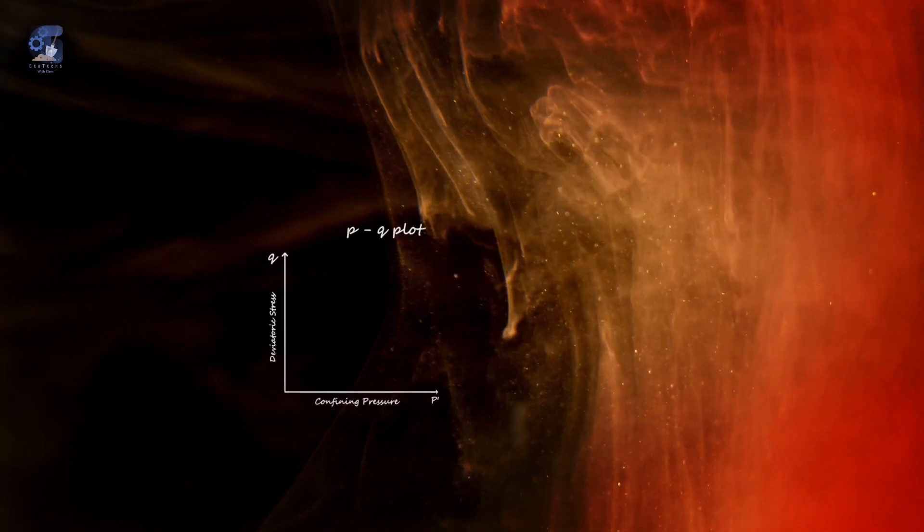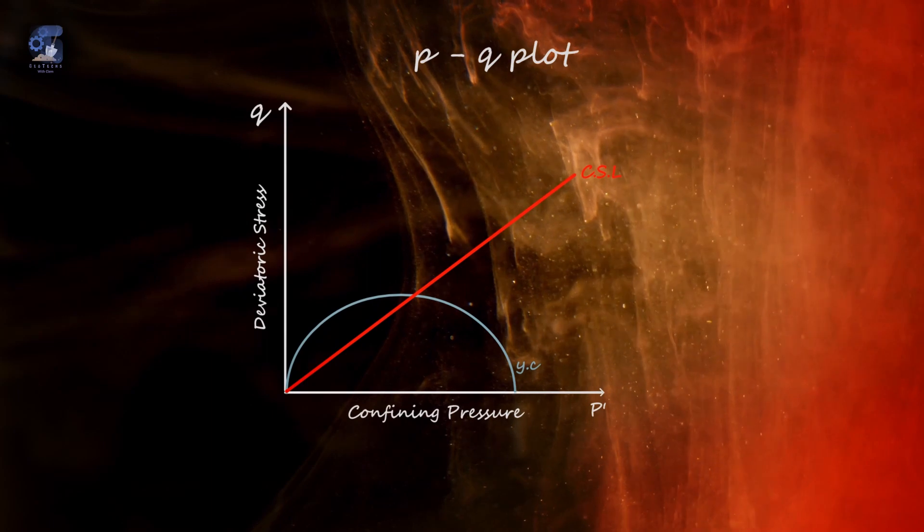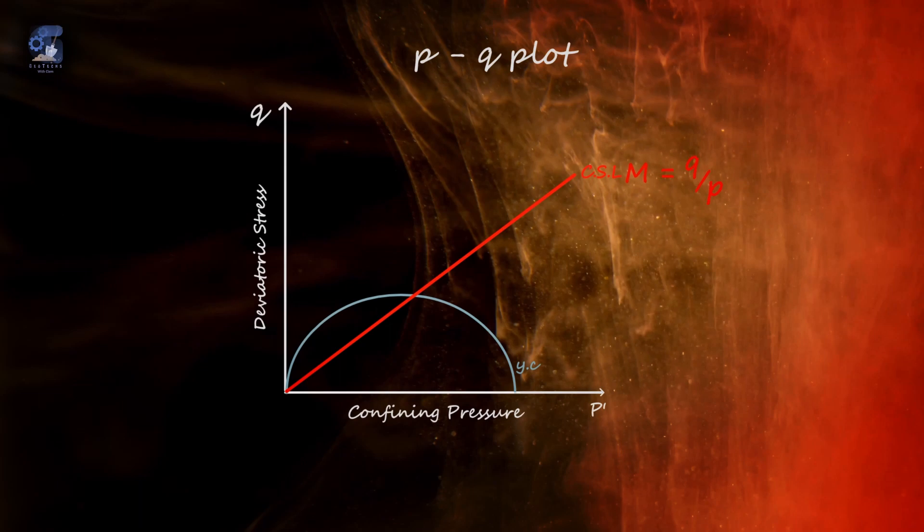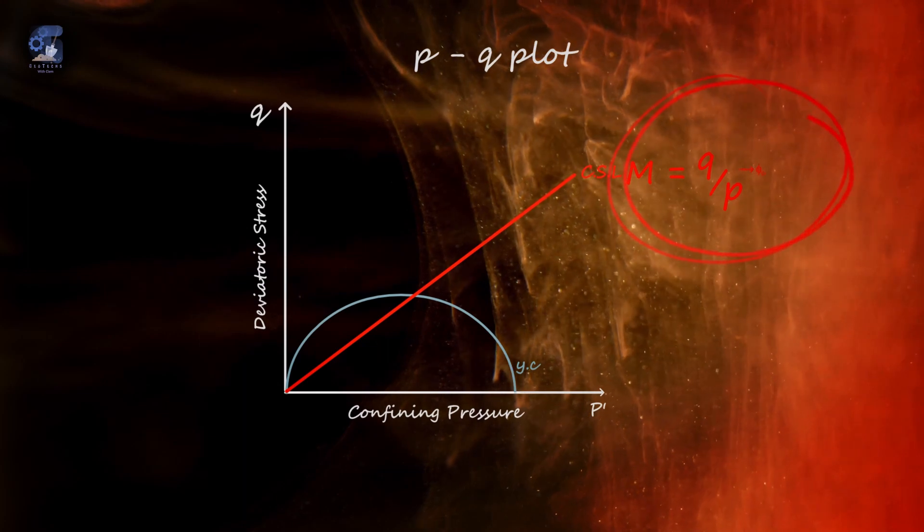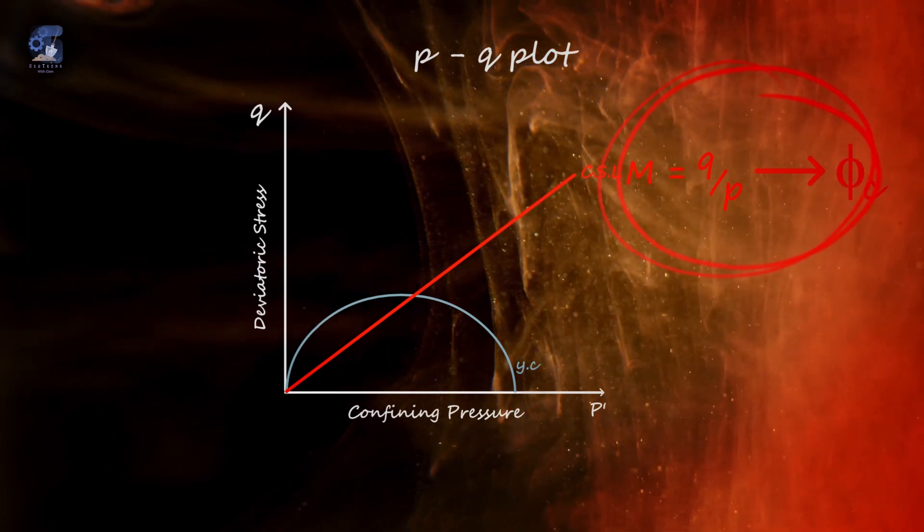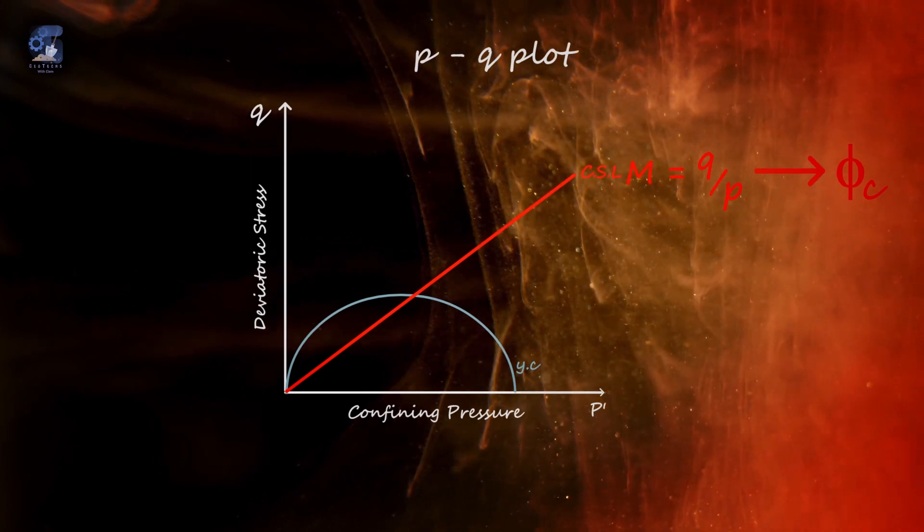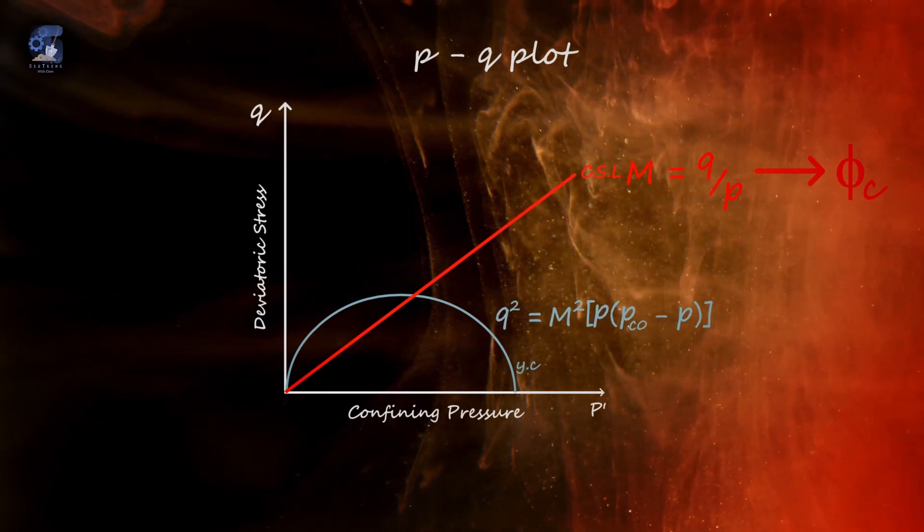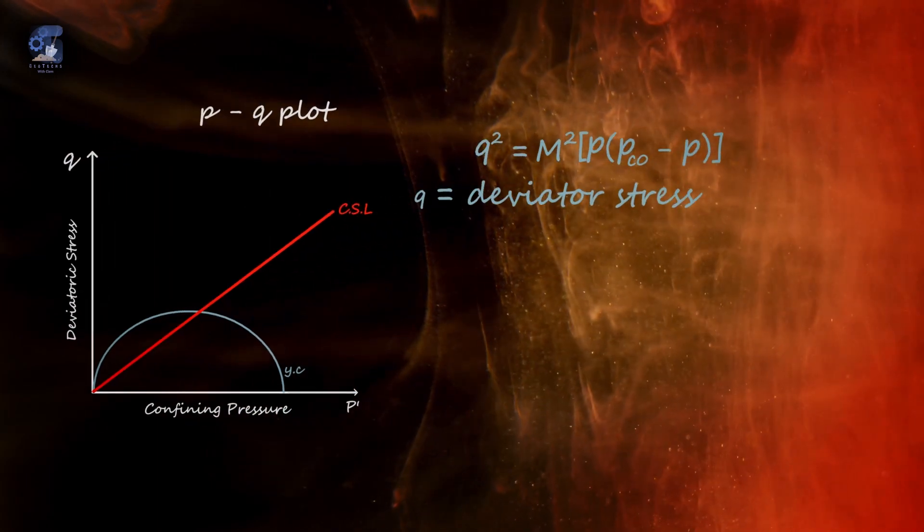On a P-Q plot, the Cam-clay model is represented by a critical state line and a yield curve. The critical state line is defined by M, which is the stress ratio at failure Q over P at any point along the line, and it is governed by the soil's friction angle at critical state. The Cam-clay yield curve is represented by an elliptical curve, and it is basically defined by the equation of the ellipse with the variables defined by the soil properties. Where Q is the deviator stress,